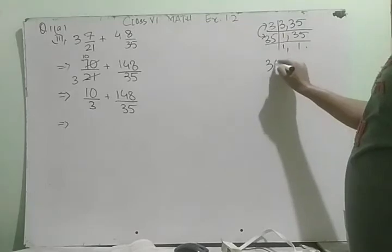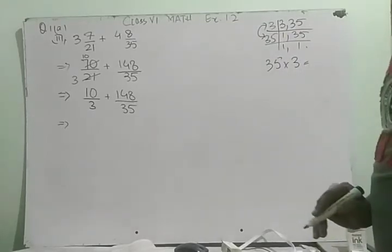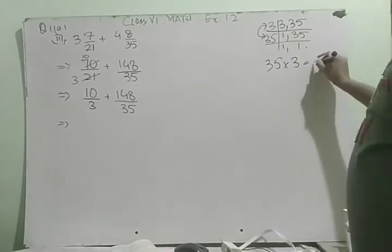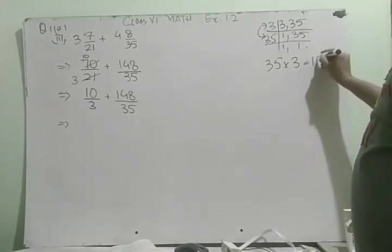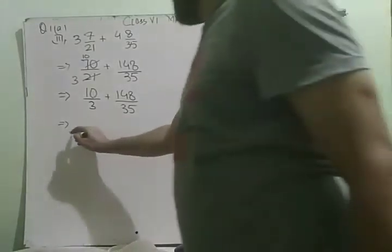Look at the denominator, multiply by 3 is equal to 105. This is the LCM. Now the denominator is 105.